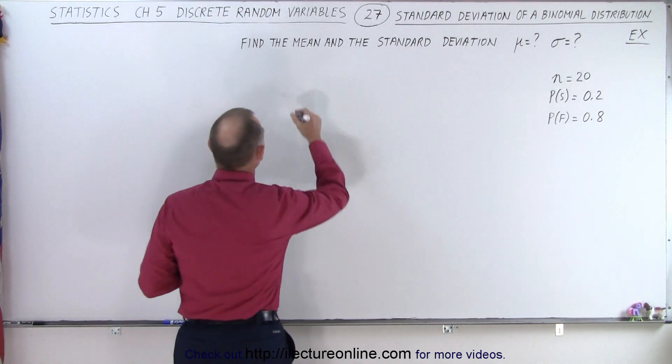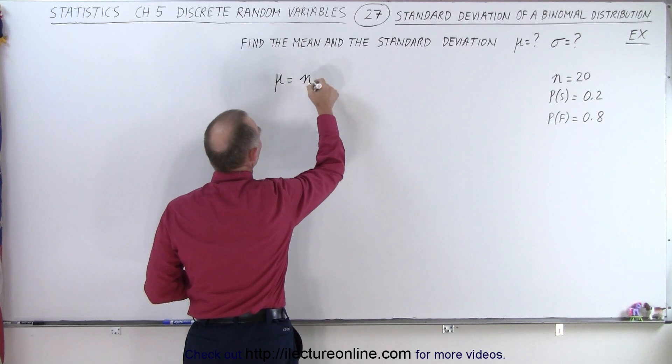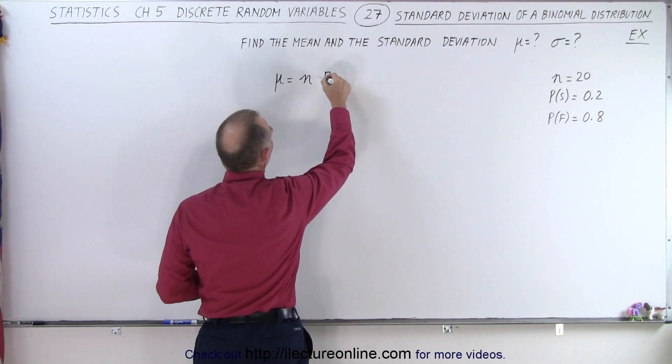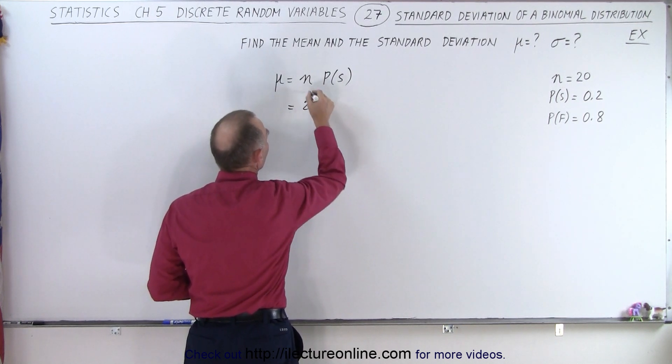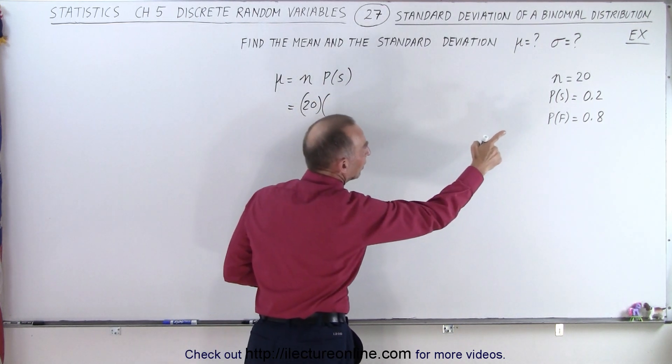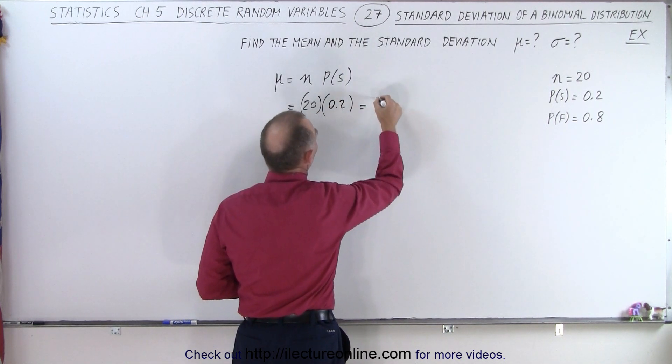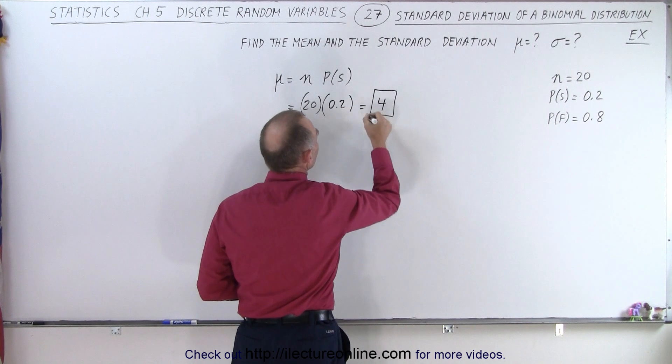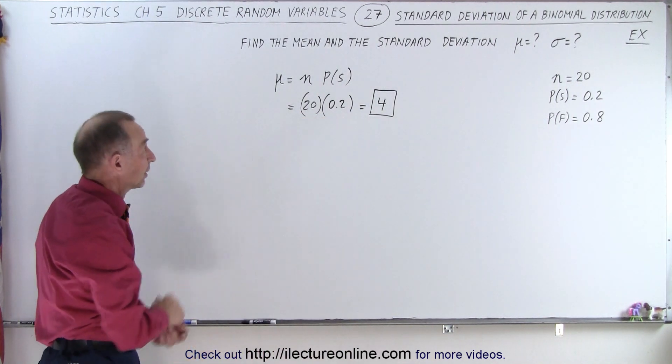All right, let's go ahead and first find the mean, and that is defined by the number of trials times the probability of success. So in this case, the number of trials is 20, and the probability of success is 0.2. That would be 4, which is what we call the mean, or the average expected value in this particular case.